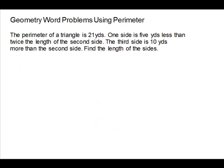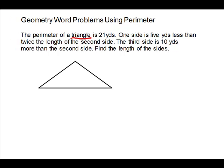Here's another example of a geometry word problem using perimeter. This time our shape is a triangle. Before we draw a picture, let's read to make sure it's not a special kind of triangle like isosceles or equilateral. The perimeter of a triangle is 21 yards. One side is 5 yards less than twice the second side. The third side is 10 yards more than the second side. Find the lengths. It is not one of the special triangles, so we'll draw a triangle and number the sides: first, second, and third.